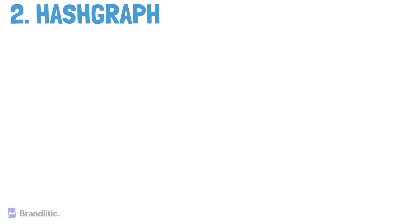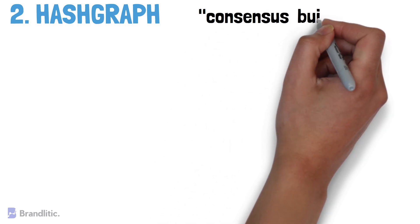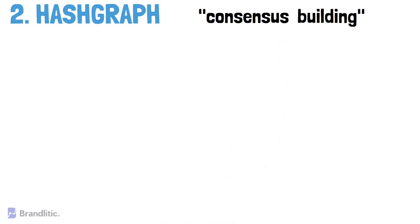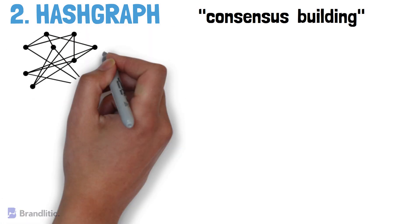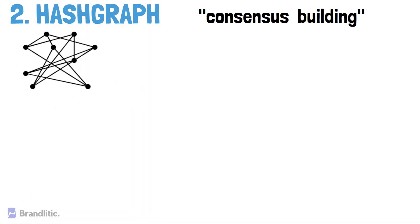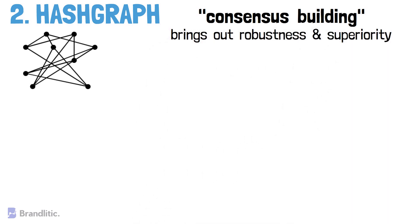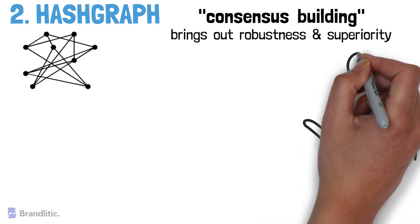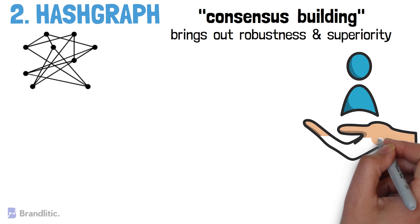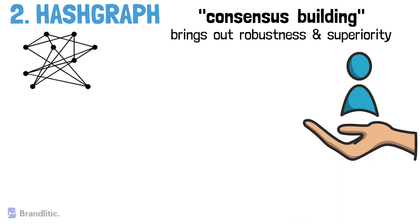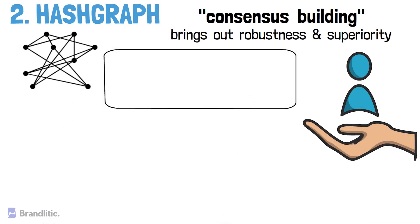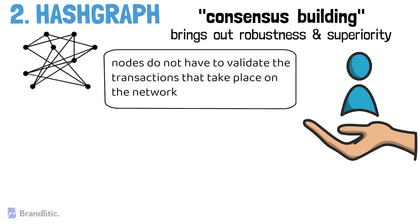Number two: hashgraph. Hashgraph is a type of distributed ledger whose foundation lies in consensus building. DLT relies on consensus timestamping to ensure that transactions on the network agree with each other and with every node on the platform. The consensus algorithm brings out the robustness of the DLT network. Unlike traditional DLTs, hashgraph achieves transaction success solely on the basis of consensus.